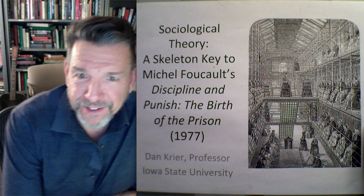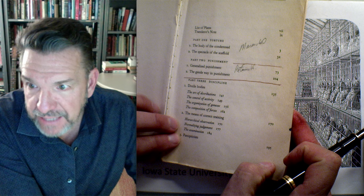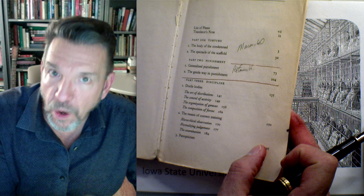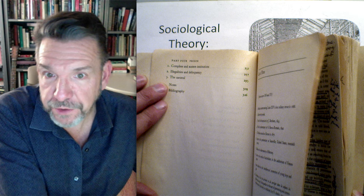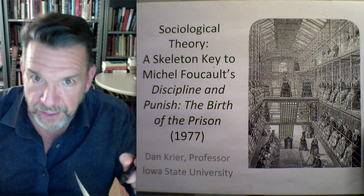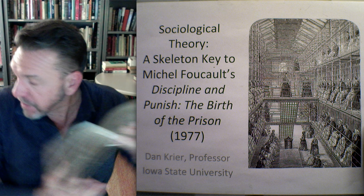Welcome to the fourth of what will be five lectures on Michel Foucault's Discipline and Punish. This lecture is going to focus entirely on Part Three: Disciplines. We'll get through docile bodies and the means of correct training for certain, and I may foreshadow panopticism. Then we'll come back for one final lecture wrapping up with panopticism and the carceral.